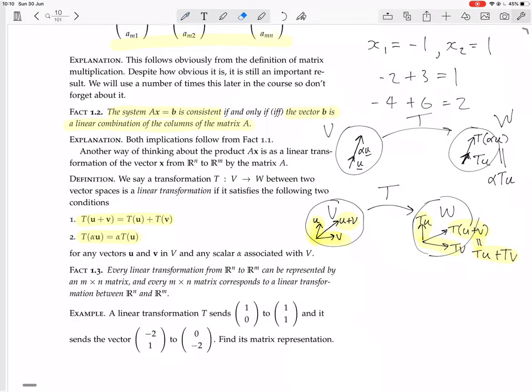When that happens, then we say that T preserves or respects scalar multiplication, and when both of these things are true, when it preserves or respects scalar multiplication and vector addition, then it's called a linear transformation.